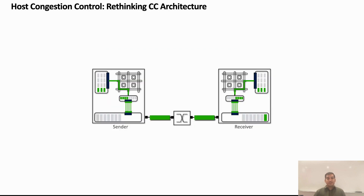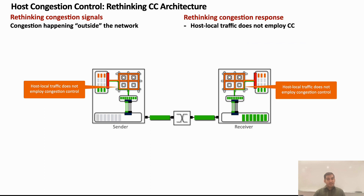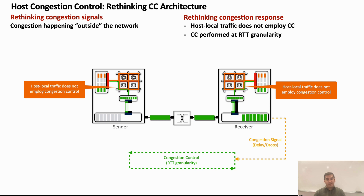Our work takes the first step towards alleviating application-level performance degradation in the regime of host congestion. To that end, we argue first we must rethink congestion signals to capture host congestion. Host congestion is a result of queuing at resources like memory controller, which is outside of what is considered to be the network by existing CC protocols. Traditional congestion signals like switch buffer occupancy or packet drops therefore do not capture the precise time, location, and reason for host congestion. We must also rethink congestion response, for two reasons. First, unlike network traffic, host local traffic does not employ congestion control mechanisms. This breaks an unspoken assumption in classical CC literature that all competing traffic must adhere to the congestion control protocol. Second, host local traffic operates at a sub-microsecond granularity and is much closer to the congestion point. Thus, classical congestion control protocols that operate at network RTT granularity can perform far from optimal in the host congestion regime.